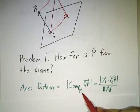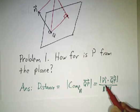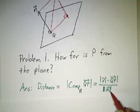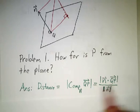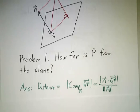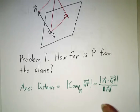We know how to do that — we do it by taking a dot product. Take the dot product of the normal with QP, divide by the length of the normal. You do need to take an absolute value, because the component might be negative. If it's negative three, you're not at a distance of negative three, you're at a distance of three.